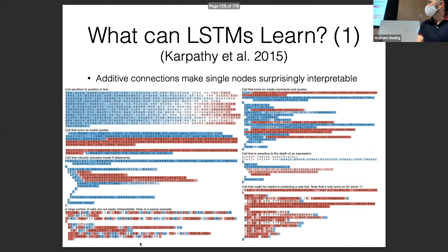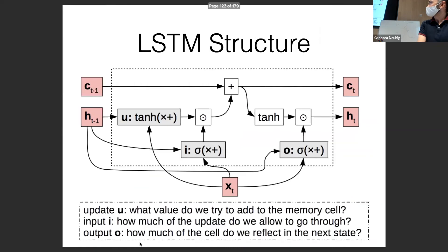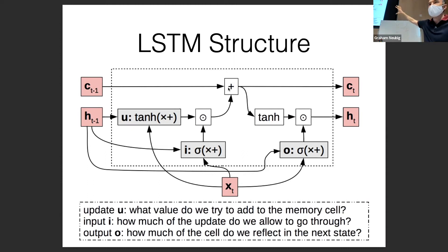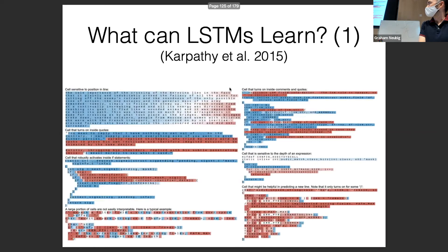There are other interpretable cells — activating inside an if-statement, sensitive to expression depth in code. There are also many cells you can't easily interpret, probably modeling within-word predictions. The additive connections in the LSTM make it particularly useful for this interpretability — because it's purely additive with no matrix multiplication in the cell state, information is passed on as-is, making the cell state more interpretable.